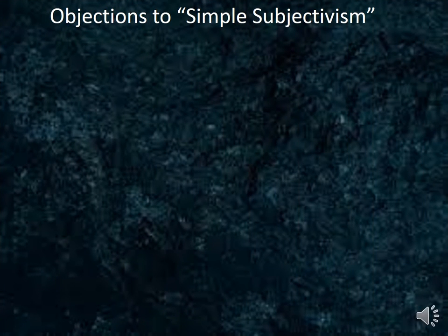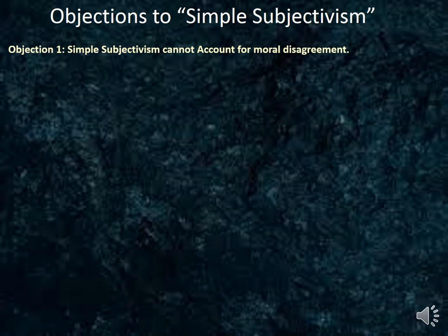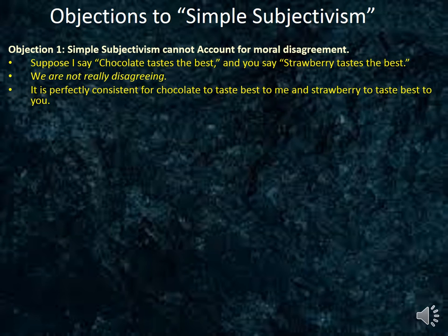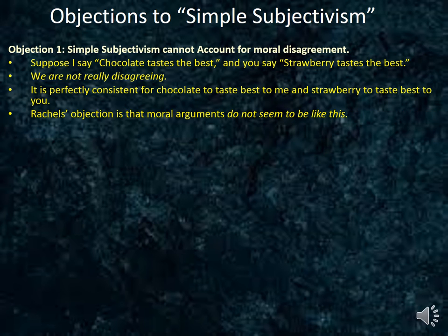Rachels provides two objections to simple subjectivism. Objection 1: simple subjectivism can't account for moral disagreement. Let's take the ice cream example again. If I say chocolate tastes best and you say strawberry tastes best, and we each understand that by 'best' we mean 'best to me,' then we are really not disagreeing. It is perfectly consistent for chocolate to taste best to me and for strawberry to taste best to you. Rachels' objection is that moral arguments do not seem to be like that.